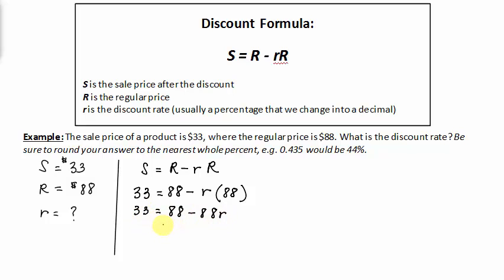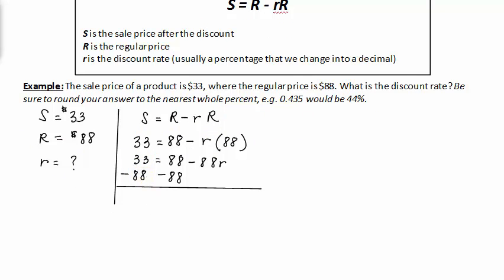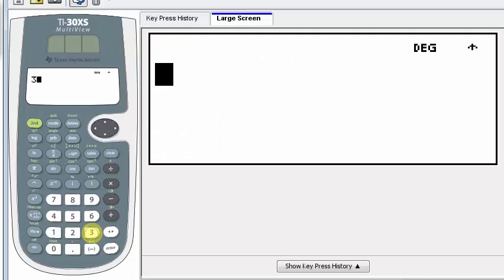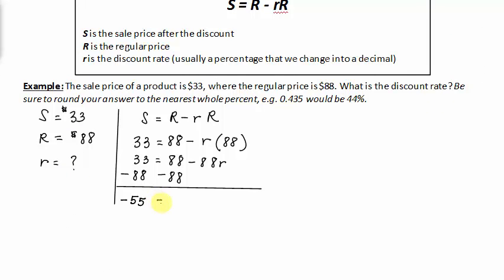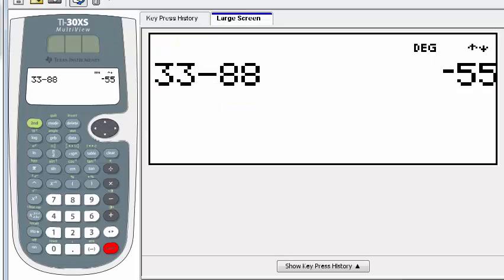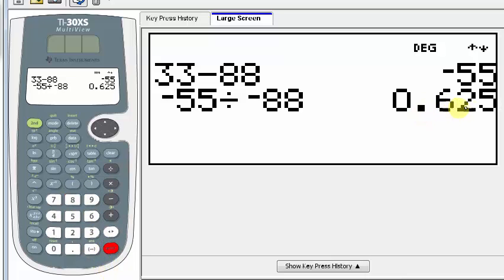So I'll go ahead and subtract 88 from each side. And we get 33 minus 88, and we can use our calculator if we need to. It's negative 55, equal to negative 88r. Next we divide each side by negative 88. And we get r equal to, using our calculator, negative 55 divided by negative 88, which is 0.625.